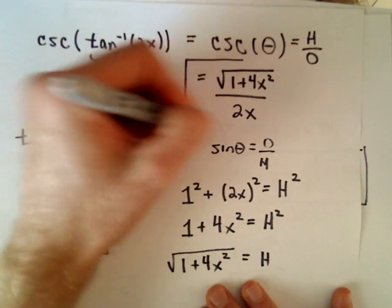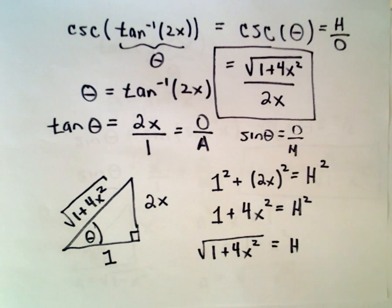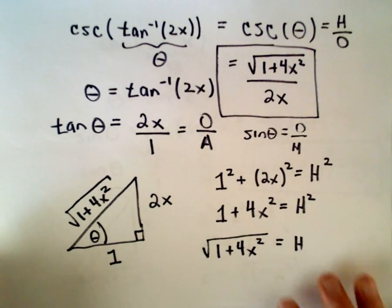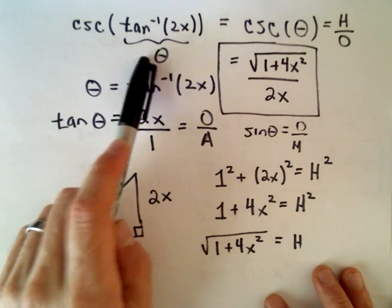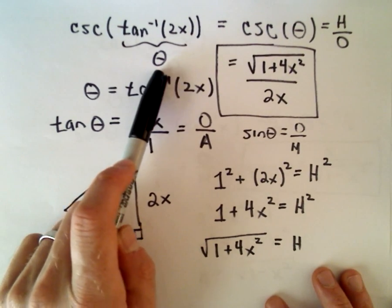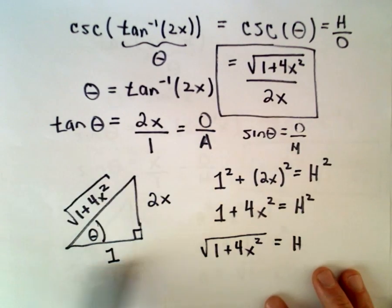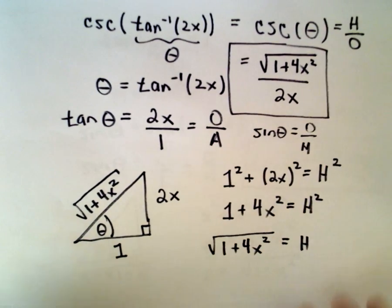It says cosecant of the inverse tangent of 2x is going to equal the square root of 1 plus 4x squared all over 2x. So same thing as when you're evaluating numbers, trying to figure out numerical values. Just replace the inside. Call it whatever you want - I always use theta for angles. Use the appropriate trig function, set up a right triangle, and then it's just a matter of reading things off of your right triangle.